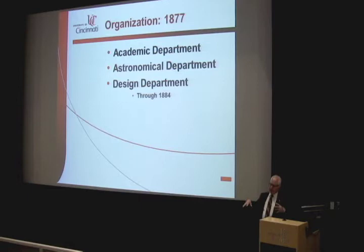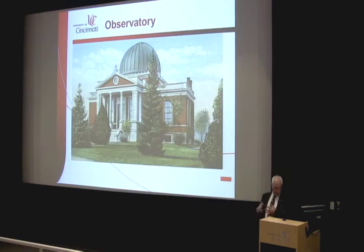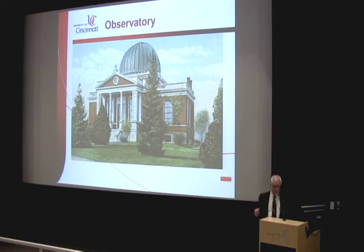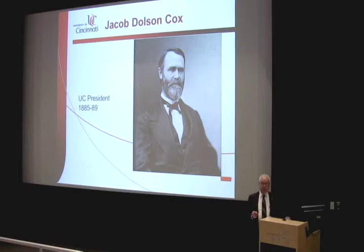Nevertheless, under Vickers the university began to look and operate something like an actual university. It had multiple departments, celebrated its first commencements, and some faculty — notably Henry Eddy — began publishing papers about their research. The city gave an entire research unit, the Cincinnati Observatory, to the university to take care of as part of its portfolio. Still, the university needed adult supervision, and it found it in Jacob Dolson Cox.